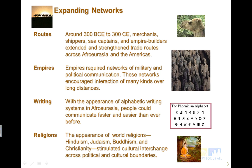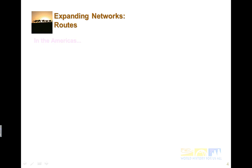We saw these four things that expanded networks and we're going to look at them in detail today. Routes, around 300 BCE to 300 CE, merchants, shippers, sea captains, and empire builders extended and strengthened trade routes across Afro-Eurasia and the Americas. Empires required networks of military and political communication, which encouraged interaction over long distances. Writing — with the appearance of alphabetic writing systems in Afro-Eurasia, people could communicate faster and easier than ever before. And religions — the appearance of world religions such as Hinduism, Judaism, Buddhism, and Christianity stimulated cultural interchange across political and cultural boundaries.